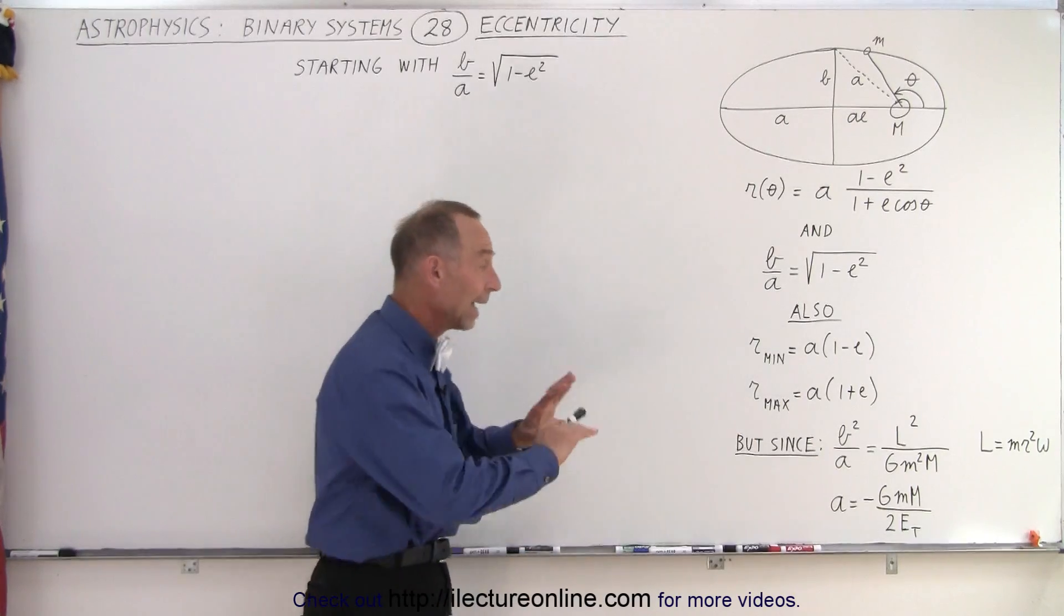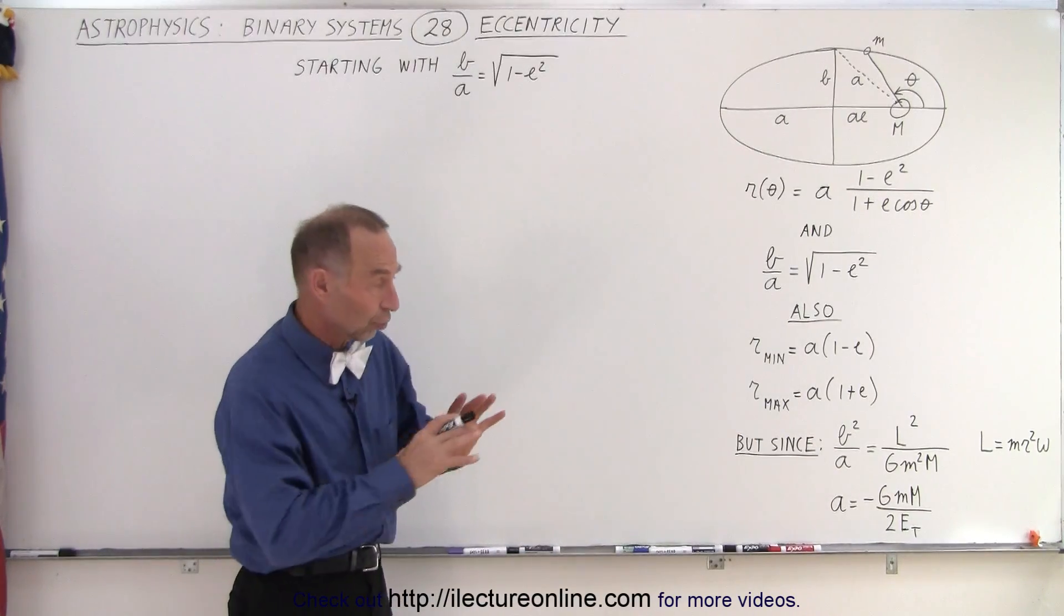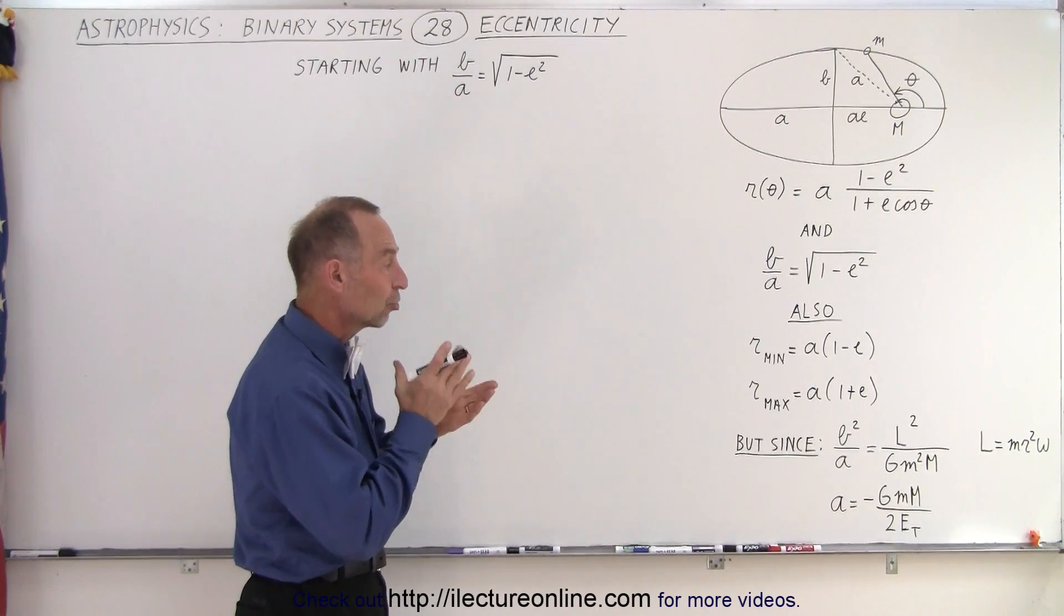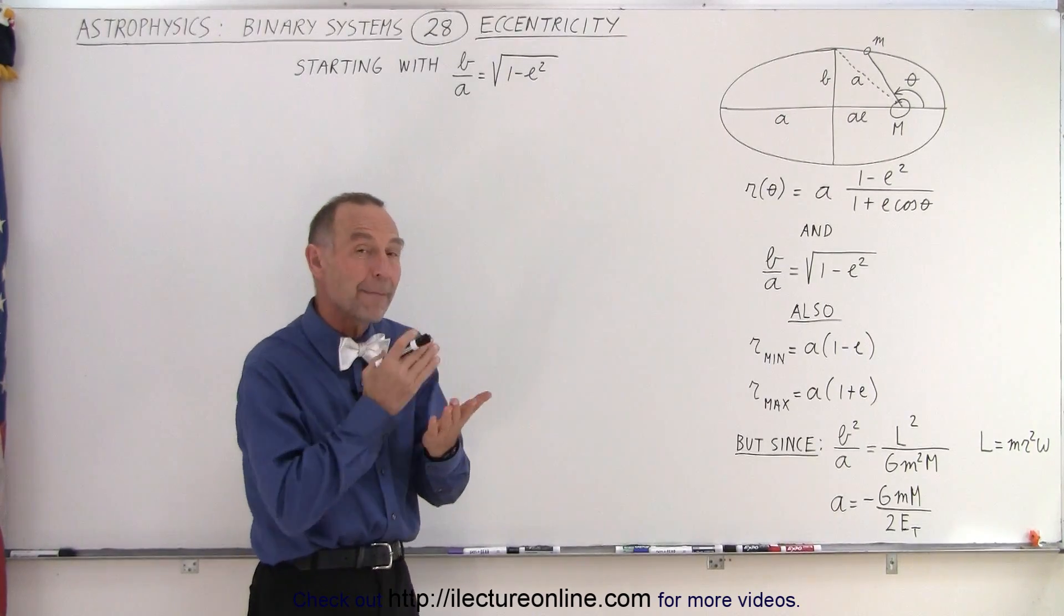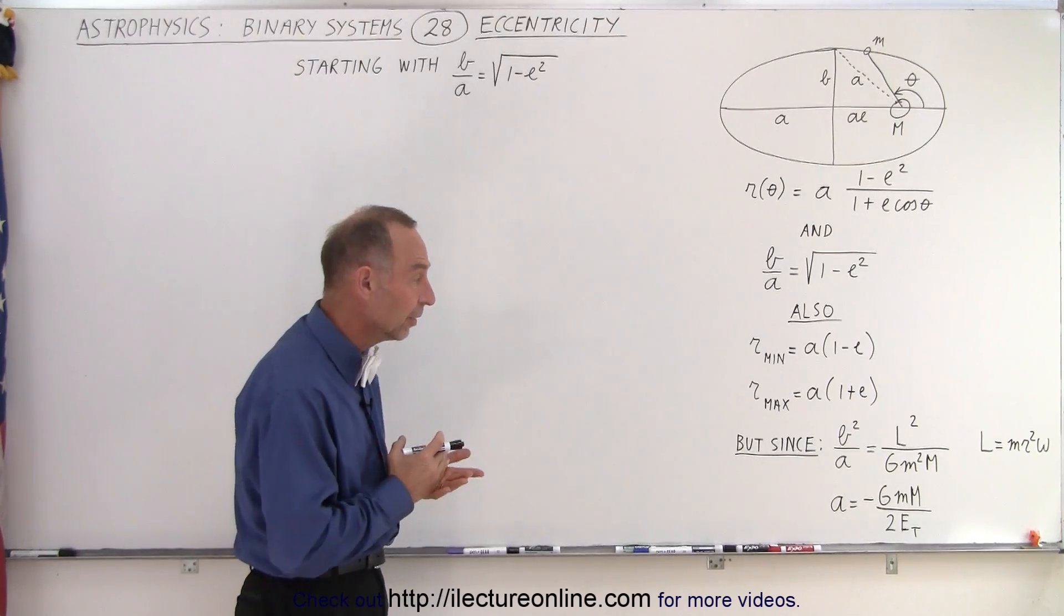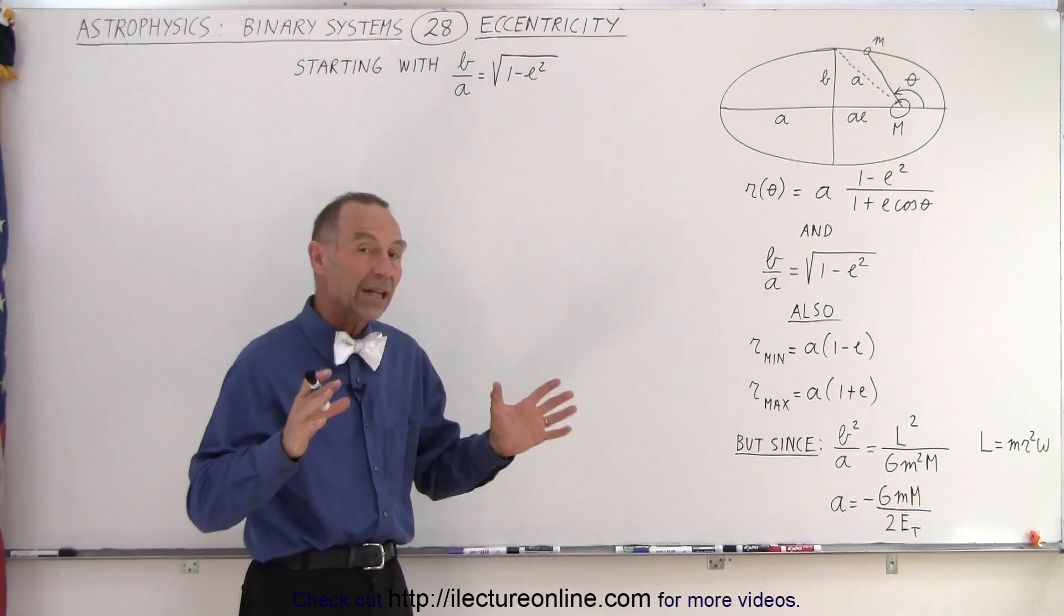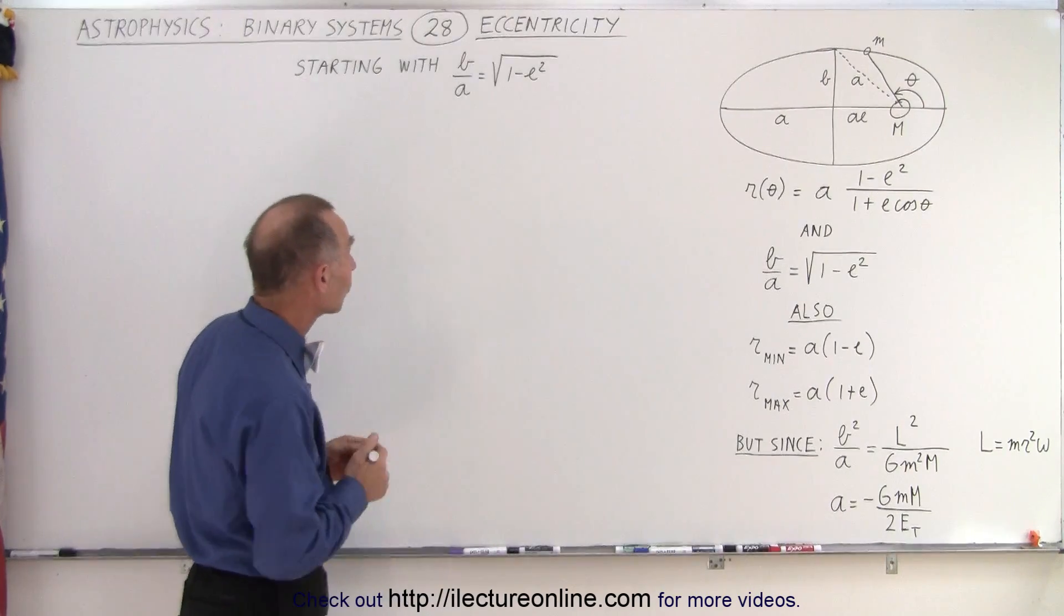So we're going to go ahead and use those properties now, those relationships, to come up with an equation for the eccentricity that describes eccentricity in terms of the mass of the planet, the mass of the sun, the angular momentum of the planet, and also the total energy of the planet. So we'll see how we can derive that.